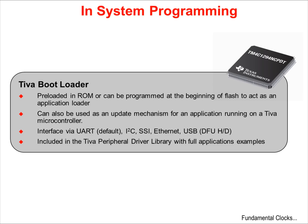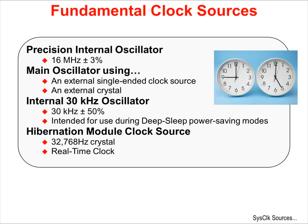Since full source code is provided, the bootloader can be completely customized. There are four fundamental clock sources on Tiva C-Series devices, which offer the developer very flexible choices when clocking the device. The precision internal oscillator is a 16 MHz oscillator, plus or minus 3%.